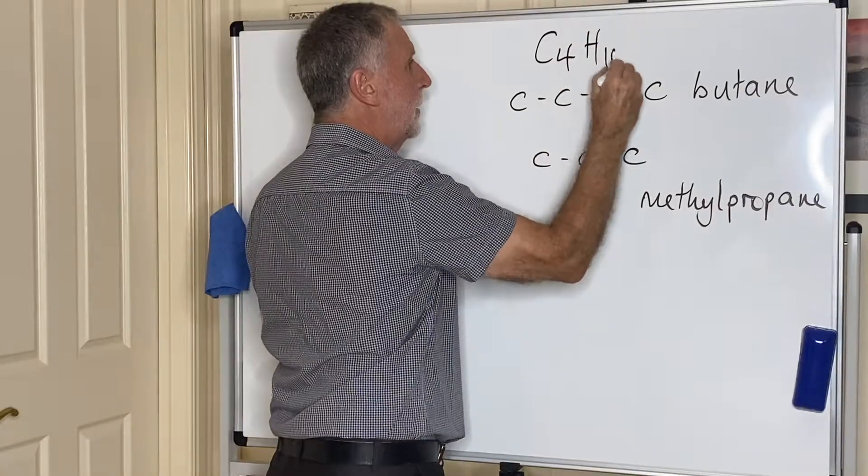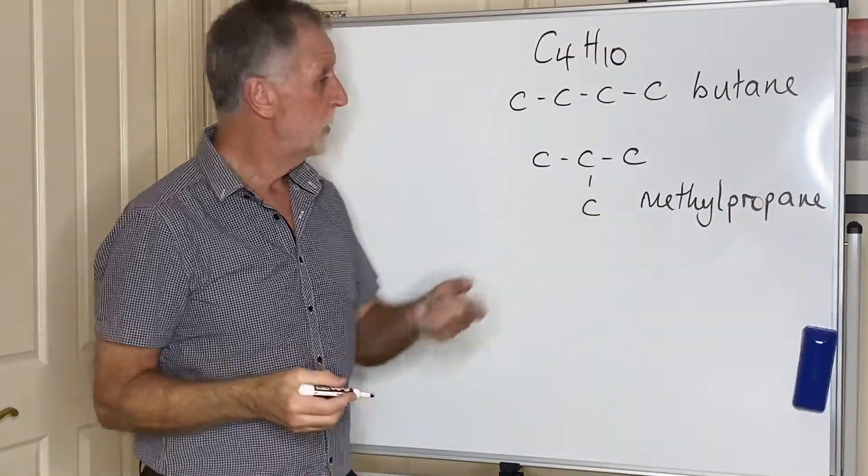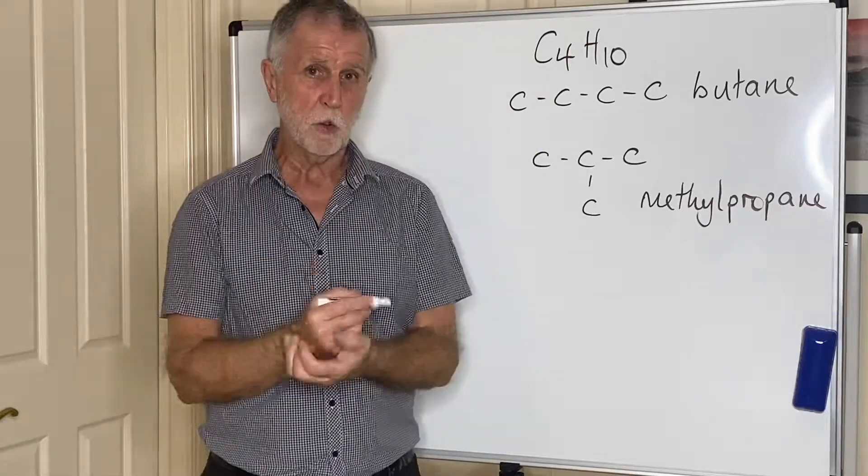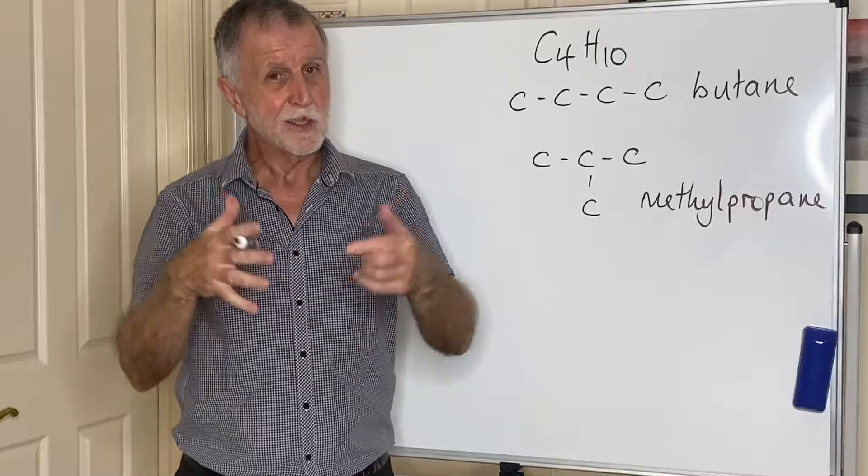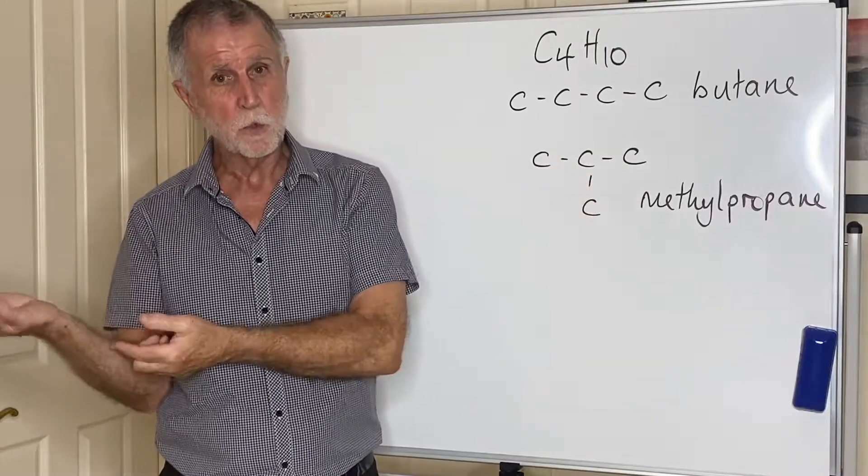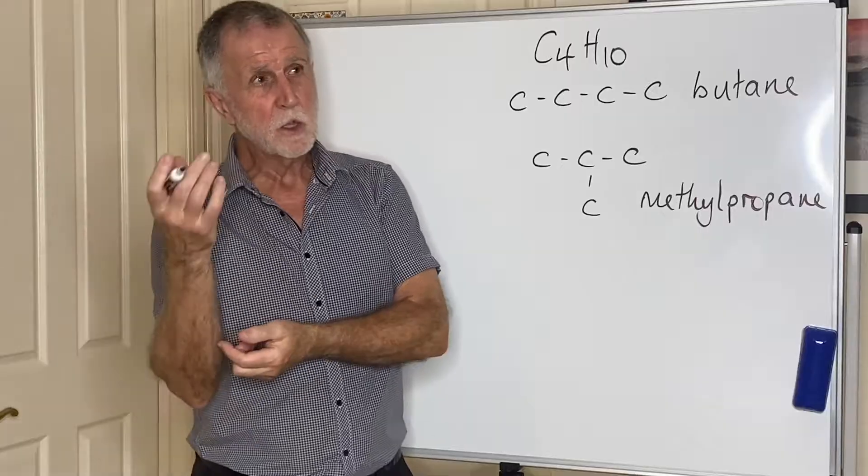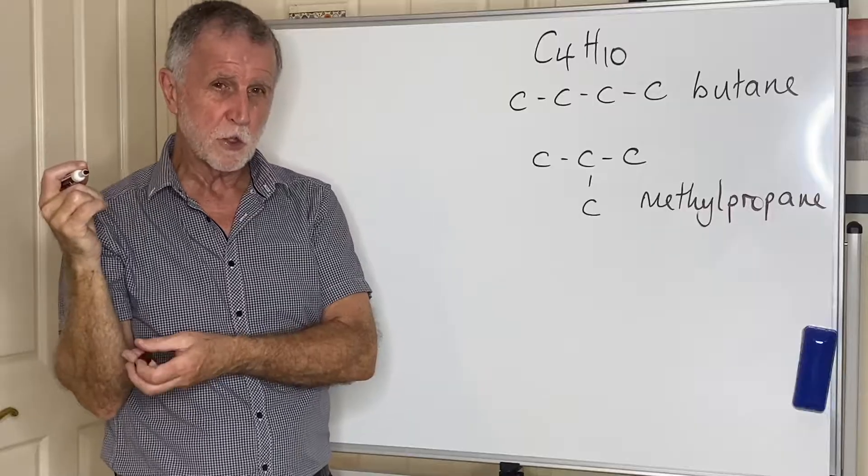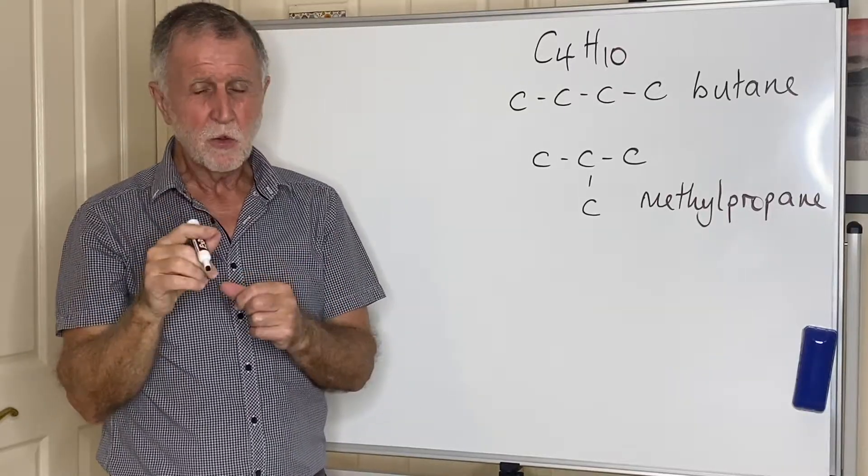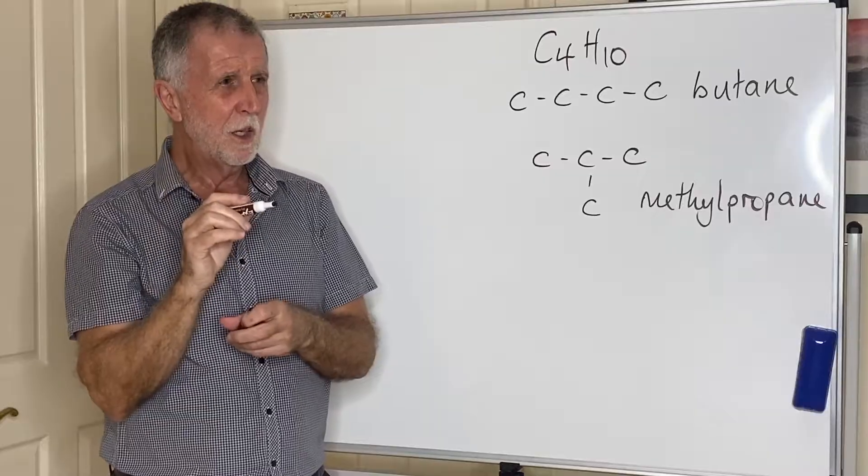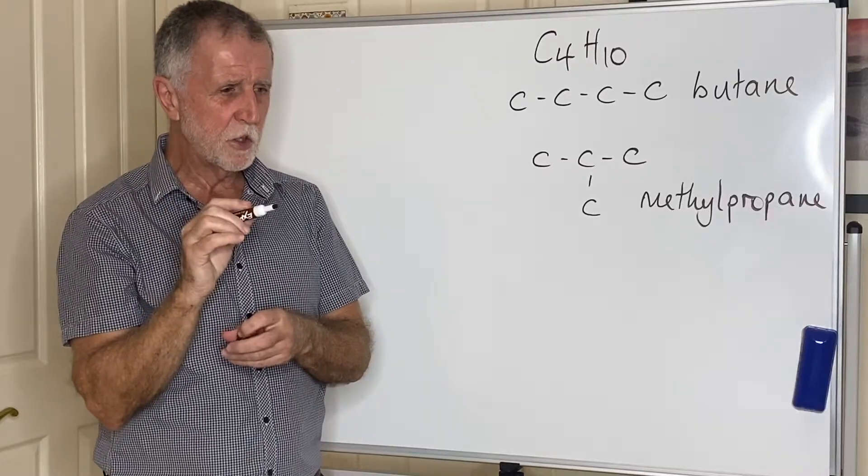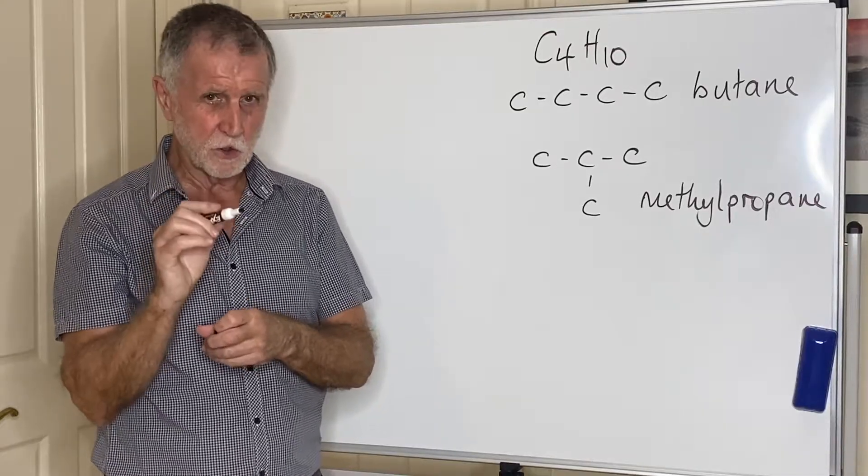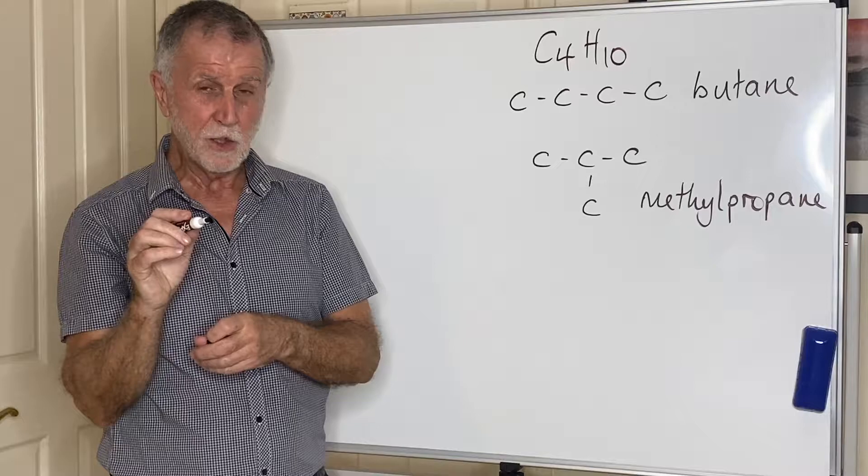Isomers are basically compounds with the same molecular formula, both of these would be C4H10, but a different structure. So with four carbons there are two possibilities, with five carbons there are three possibilities, and clearly as the number of carbons go up so there are more and more possibilities. I think I'm right in saying that if you go to 10 carbons in this alkane there are 75 possible structures.